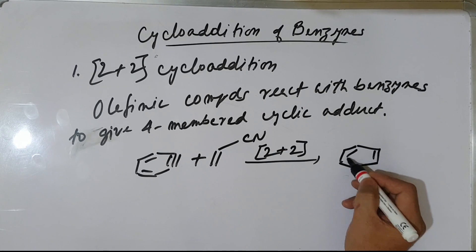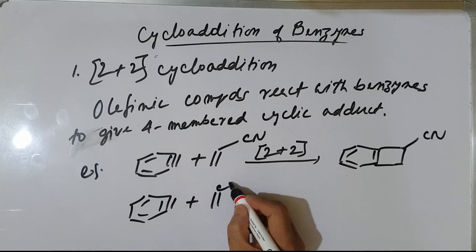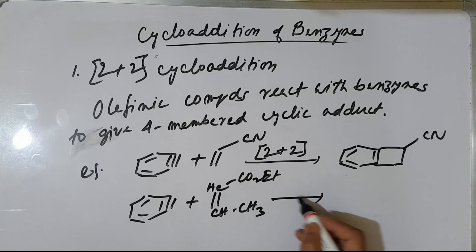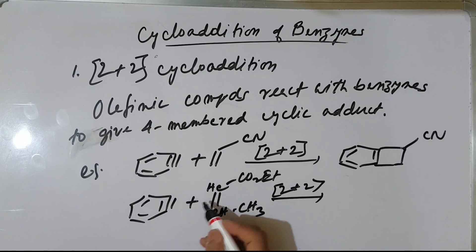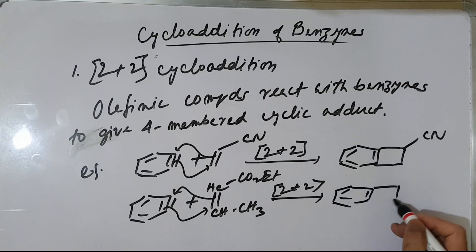To give this 4-membered ring form — with CN here. Another example: benzynes with CO2Et. CO2Et plus C≡CH reacts in a 2+2 manner. Here 2π, here 2π, so this is 2+2. The mechanism is like this. You can get the 2+2 cycloadduct.